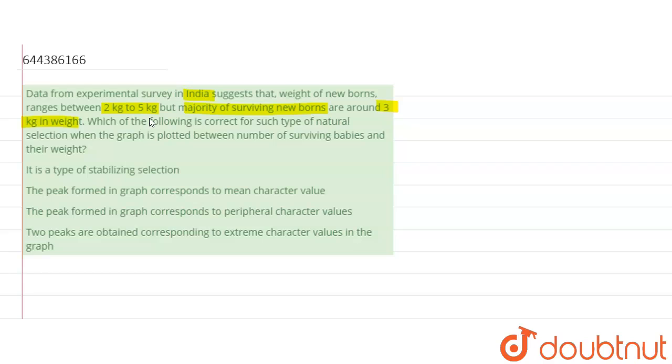When the graph is plotted between the number of surviving babies and their weight, this is an example of stabilizing selection.